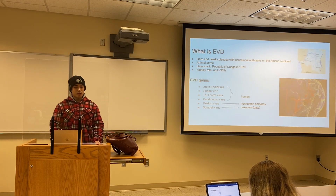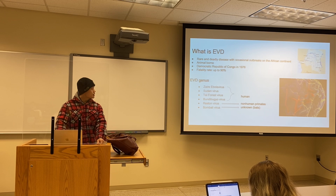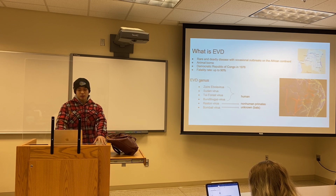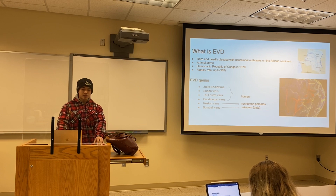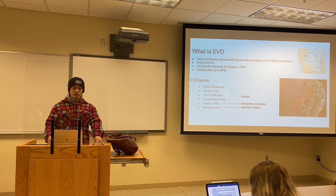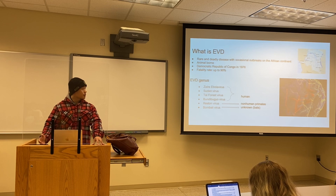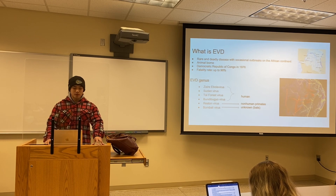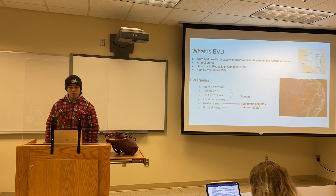So what is Ebola virus disease? Ebola virus disease is a rare and deadly disease. It has occasional outbreaks on the African continent. The disease was first discovered in 1976 in the Democratic Republic of Congo, discovered by the river whose name was Ebola River. There's a village right next to that river, and they got the name Ebola from that river.